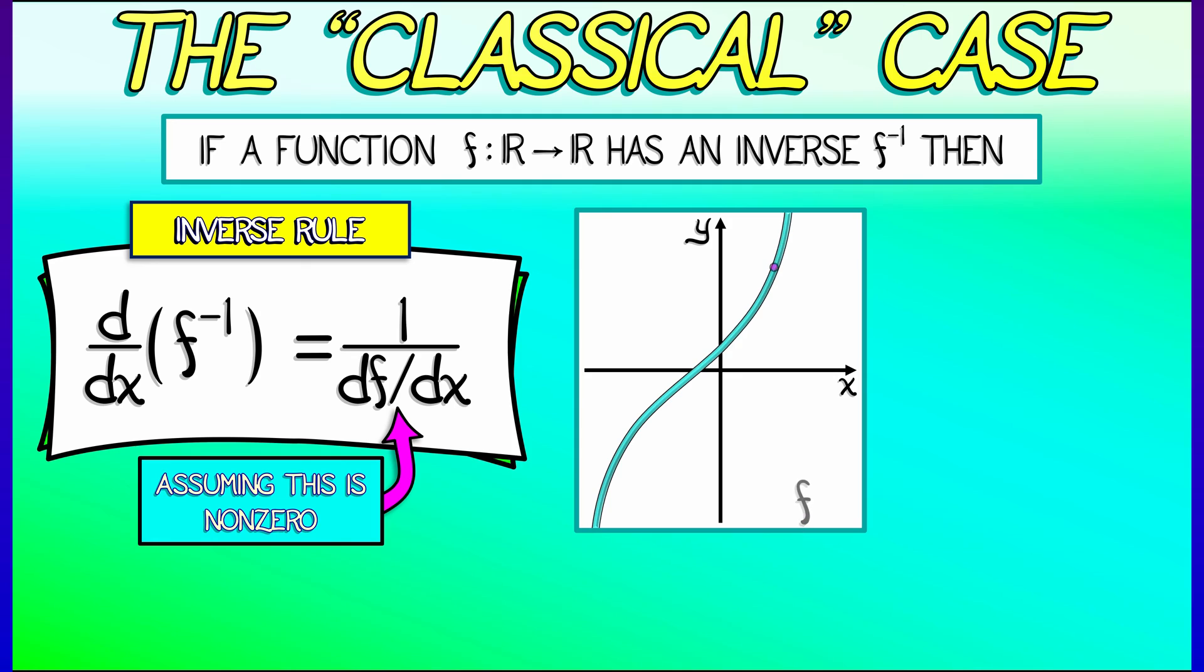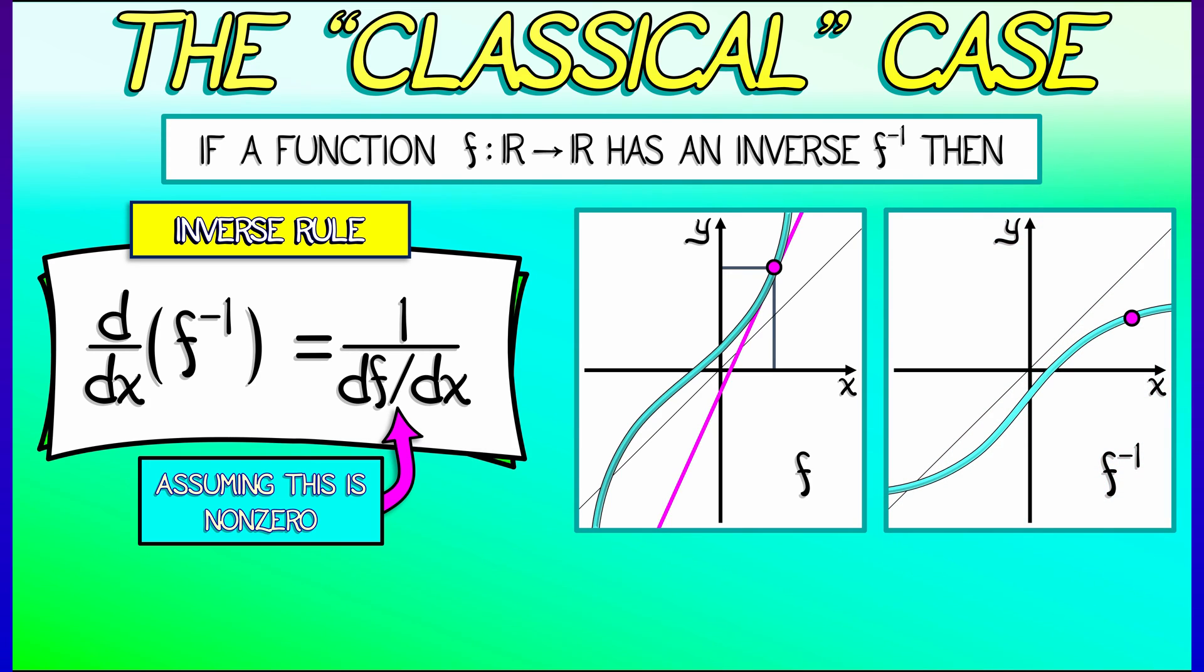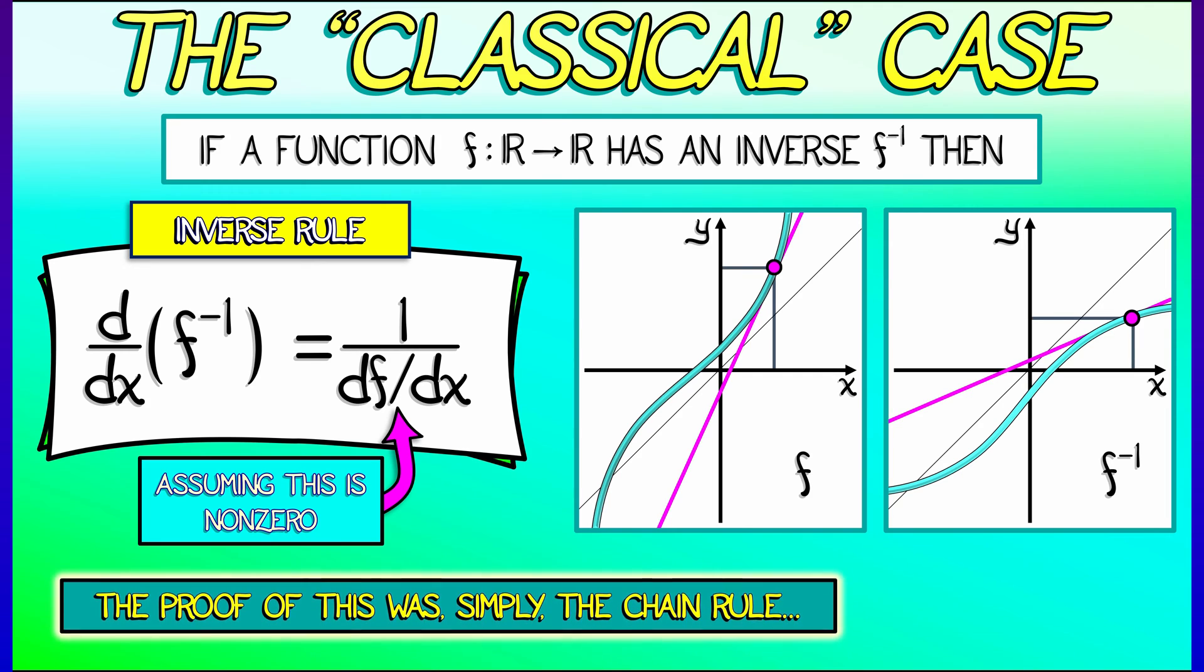But this does make sense if you even think about it graphically. Look at the graph of f. Consider the derivative at a point as being a slope. Then what's the relationship to the inverse? Well, the inverse graph is flipped about the diagonal where the input equals the output. That exchanges the roles of inputs and outputs, and indeed, the slope certainly matches up.